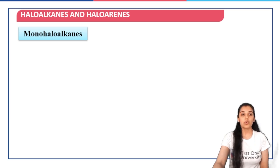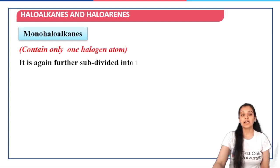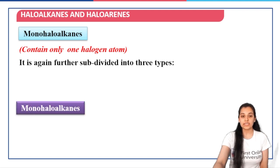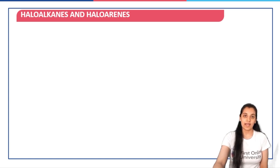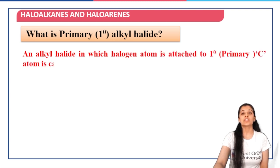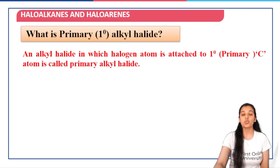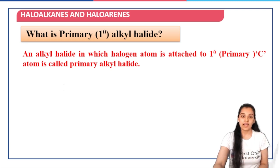When we talk about Mono Halo Alkanes — those which contain only one halogen atom — these are further subdivided into three types: primary alkyl halide, secondary alkyl halide, and tertiary alkyl halide. The primary alkyl halide is one in which the halogen atom is attached to a primary carbon, that is the carbon which is attached to just one other carbon atom.